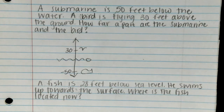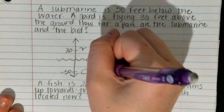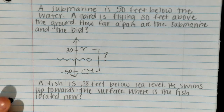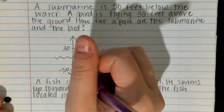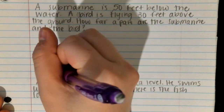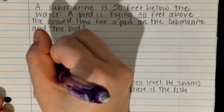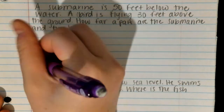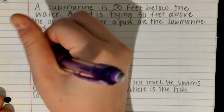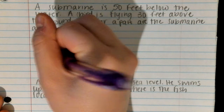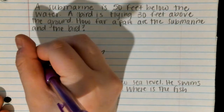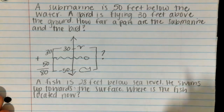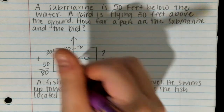The bird is flying above the water, 30 feet above, so it's in the positive section. To find how far apart they are, I start at the submarine and get to zero: that's 50 spaces. Then from zero to 30, that's 30 spaces. Together that's 80 spaces, so they are 80 feet apart.